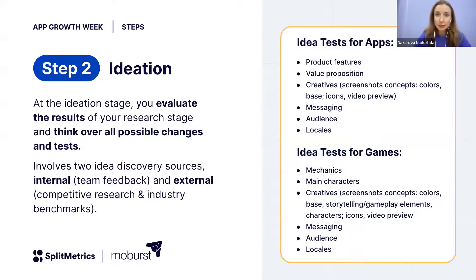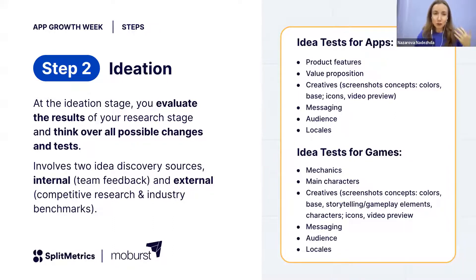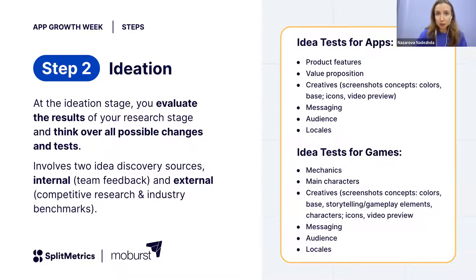The next step is ideation. On this step, you have to create a list of ideas — any possible ideas that you could test. There are several options: you could brainstorm, rely on internal data or competitive analysis. Or if you just started and you're running out of inspiration, we've prepared a list of ideas for you — you could take a screenshot and use all these ideas in your A/B testing.